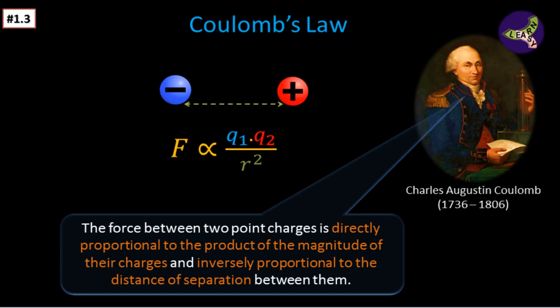So we have got the formula here: F is proportional to Q1 Q2 by R square. That is Coulomb's law. Now to equate it and remove the proportionality symbol, we have to put a proportionality constant in this manner. So F is equal to K Q1 Q2 by R square.